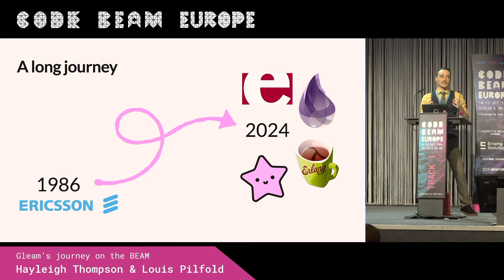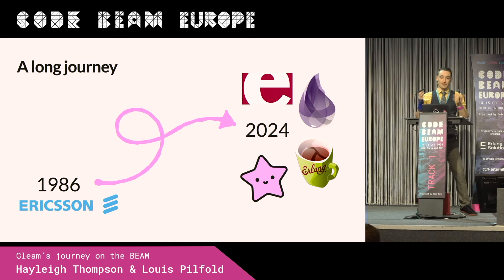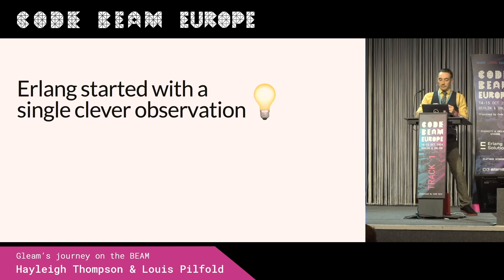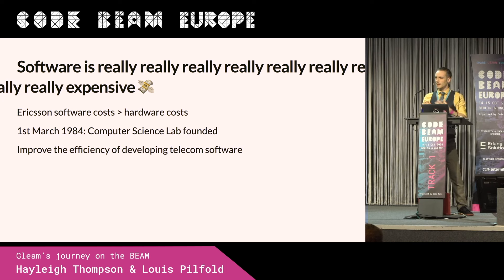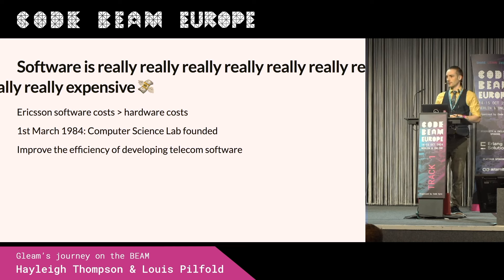But where did Erlang come from? I think it came from one very clever little idea, one observation that was very smart. Perhaps something about concurrency? Perhaps something about fault tolerance? It was actually that software is really expensive — so expensive.